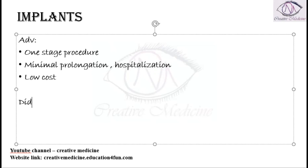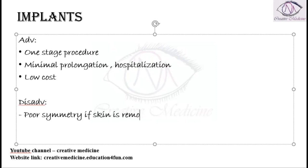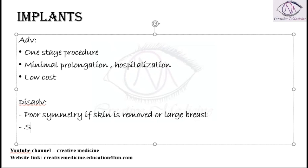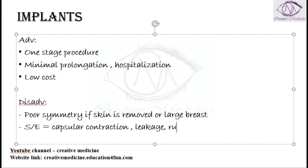The disadvantages of using implants are poor symmetry of the breast, especially if the skin is removed or if the other breast is large. The main side effects of using breast implants are capsular contracture, leakage, and rupture, which can lead to allergic reactions. All these are possible.